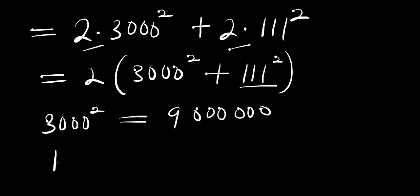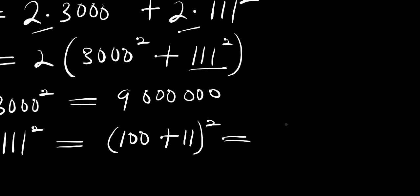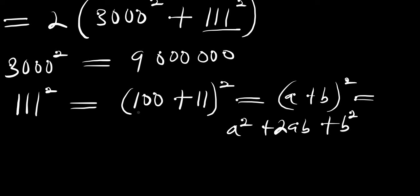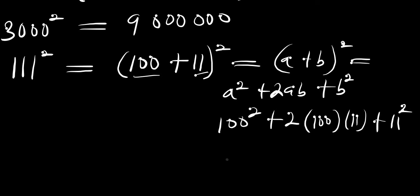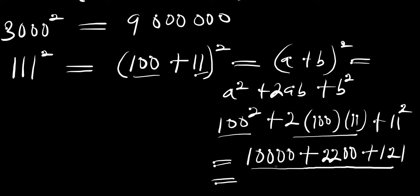And what is 111 power 2? We can write this as 100 plus 11, all raised to the power of 2. Using the identity a plus b power 2 equals a squared plus 2ab plus b squared, with a equal to 100 and b equal to 11, we get 100 power 2 plus 2 times 100 times 11 plus 11 power 2, which gives us 10000 plus 2200 plus 121. Adding those up gives 12321.